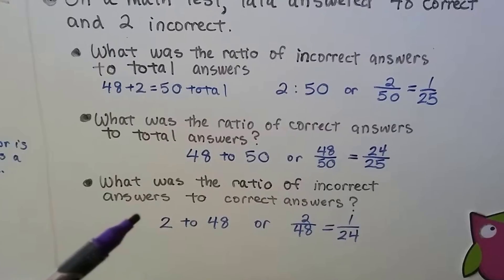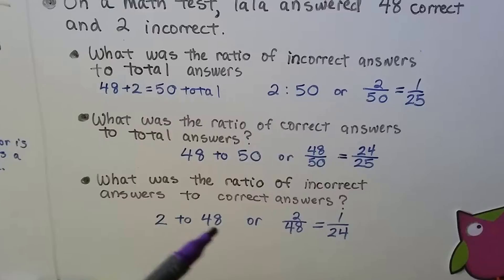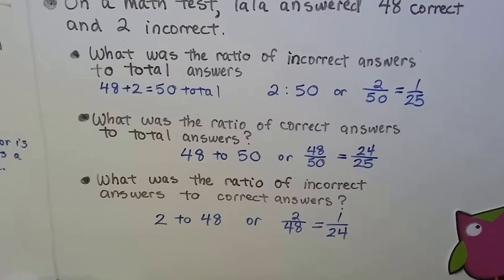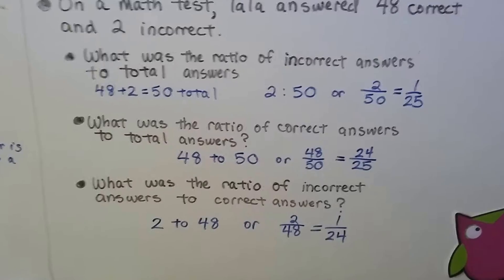What was the ratio of incorrect to correct? 2 were incorrect, 48 were correct, so it's 2 to 48, or it could be reduced to 1 to 24. We can divide both of these by 2 and we'll get 1 over 24.